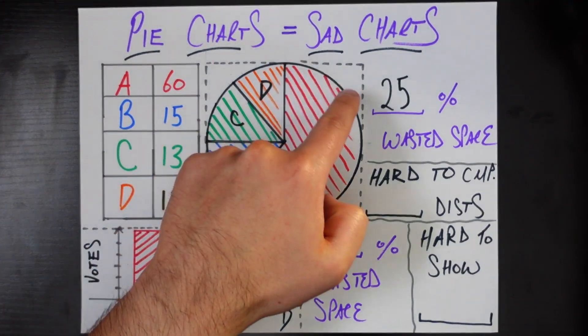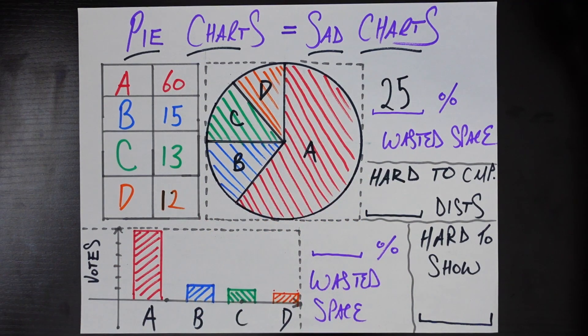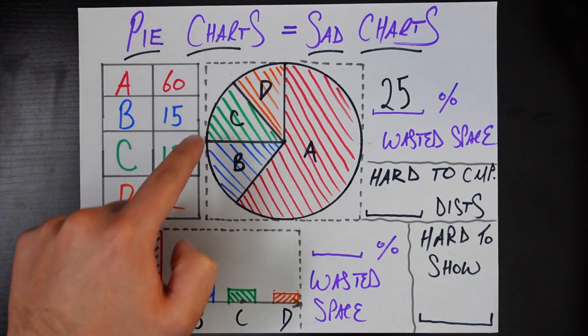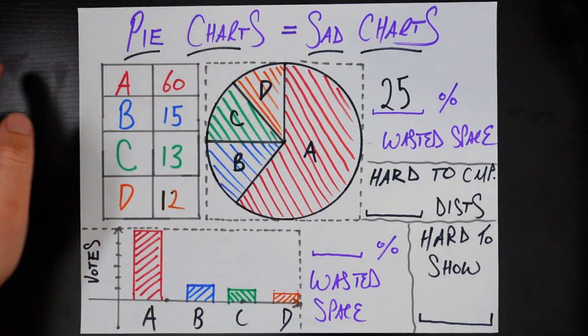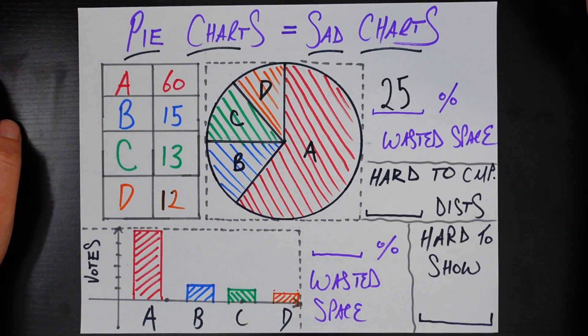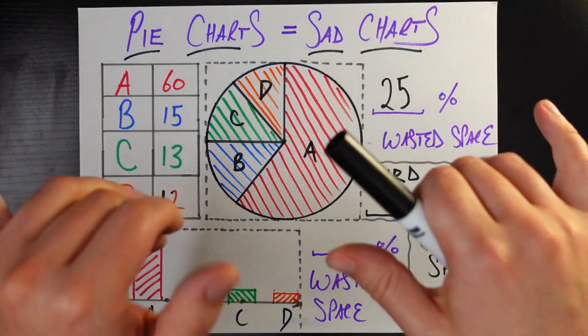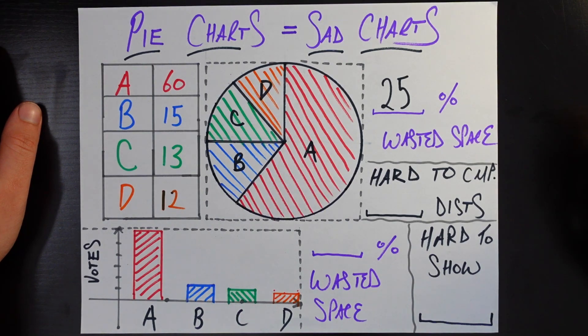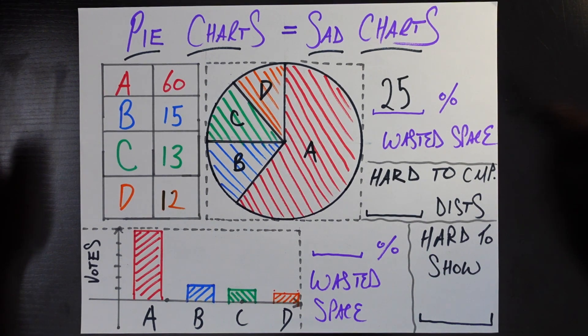And so 60 percent of the arc length is taken up by this A. 15 percent by B, 13 percent by C, and 12 percent by D. Now while humans are decent at looking at two line segments that are straight lines, and knowing which one's longer than another, we are notoriously bad at looking at curves and seeing which one has a longer curve length than the other.